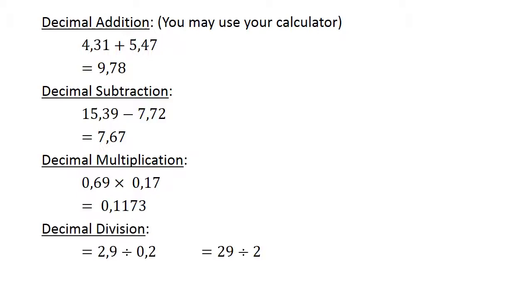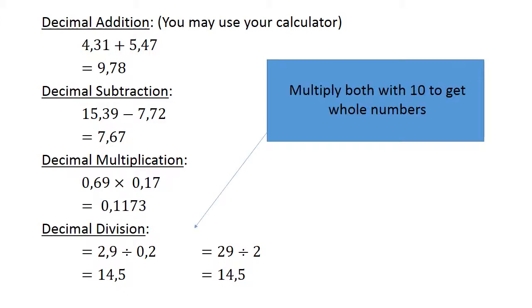Decimal division. 2.9 divided by 0.2. Multiply both with 10 to get whole numbers. 29 divided by 2 equals 14.5.